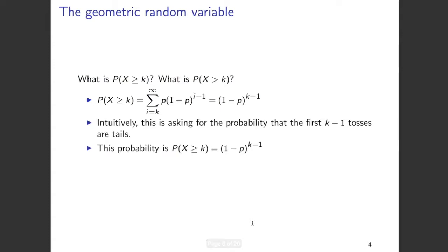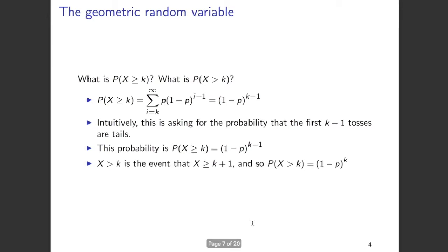Intuitively, P(X ≥ k) is the same as asking for the probability that the first k minus 1 tosses will be tails, which is (1 minus p)^(k-1). Then P(X > k) is the same as P(X ≥ k+1). Substituting, P(X > k) comes out to be (1 minus p)^k.